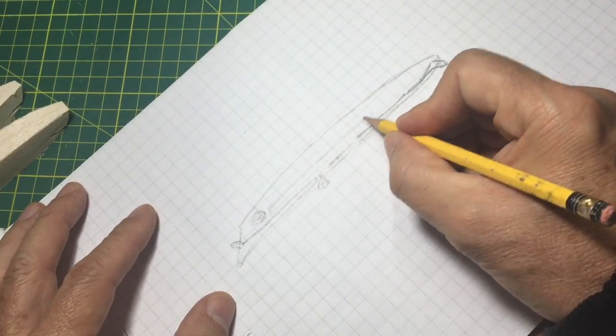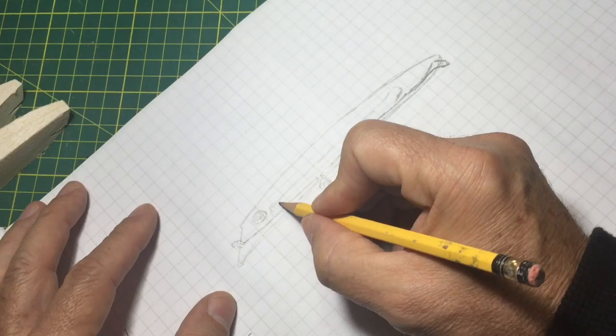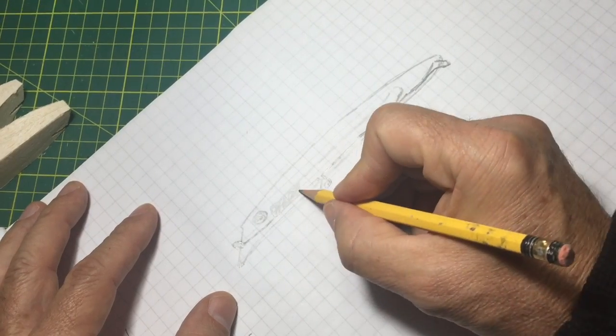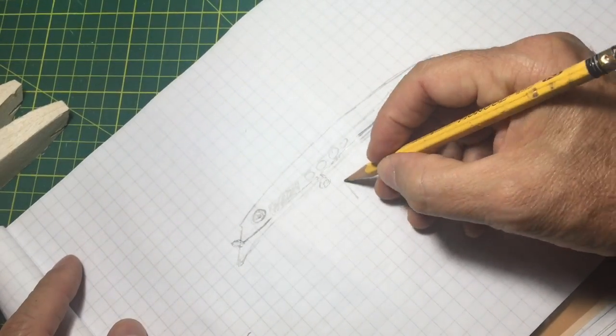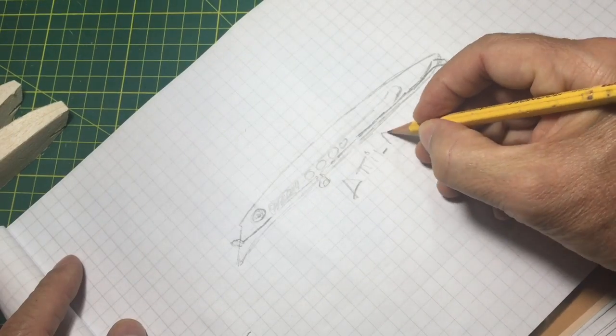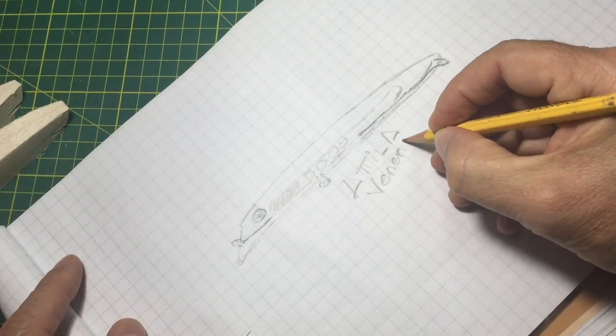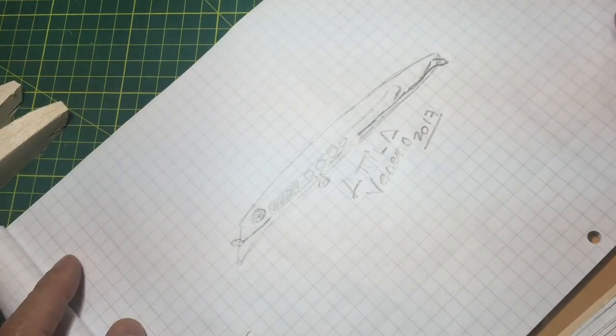Then I draw the channel for weights. The side view is almost ready. Attila Veneno. Veneno means, from Spanish, venom or poison. I like that name.